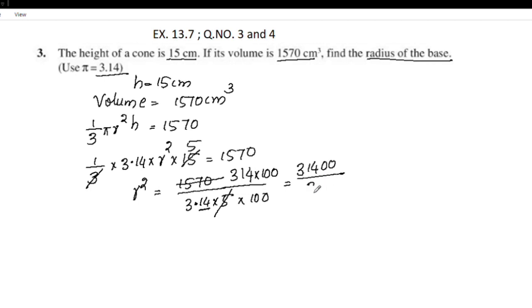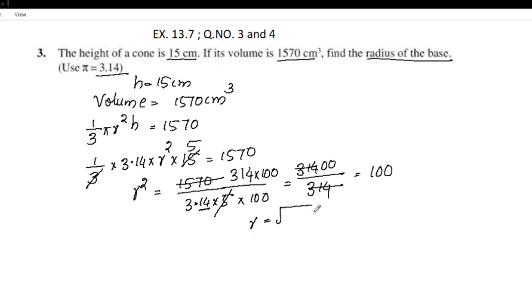The denominator is 314. We set 314 and 314 to cancel, giving r² = 100. Therefore r = 10.